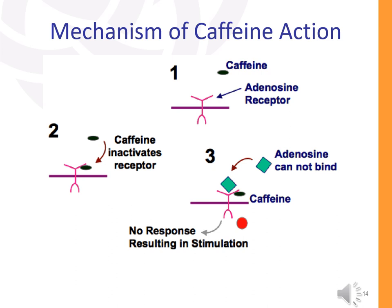Depicted below is the mechanism of caffeine action. In Step 1, caffeine shows a high binding affinity to the adenosine receptor. In Step 2, caffeine will bind to that receptor and deactivate it. Step 3 then shows that adenosine can no longer bind to the receptor. In other words, caffeine has an antagonistic effect on adenosine. Adenosine is therefore inhibited and a corresponding increase in those respective neurotransmitters — dopamine, norepinephrine, serotonin, and glutamate — occur. In this way, caffeine promotes arousal and wakefulness in the organism.